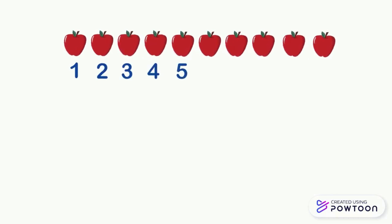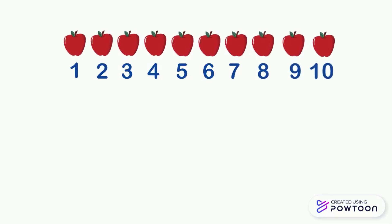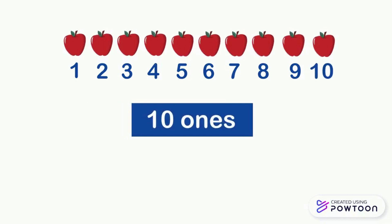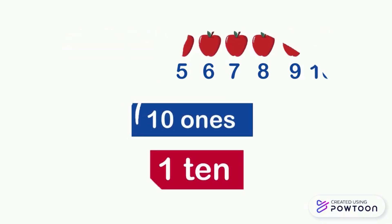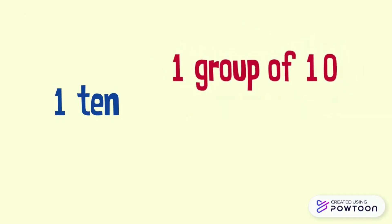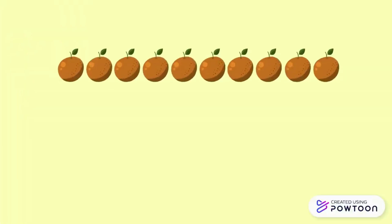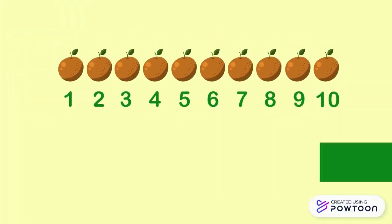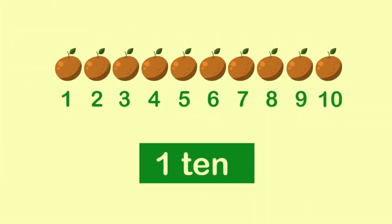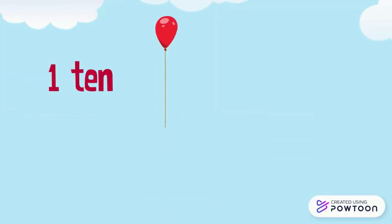Here there are some apples: one, two, three, four, five, six, seven, eight, nine, ten. There are ten apples, so it is ten ones, and we call it one ten. So what is a ten? A ten is a group of ten. One ten is a pack of ten. Here there are ten oranges, so we have one ten of oranges.